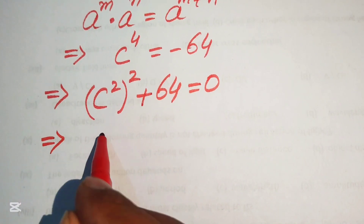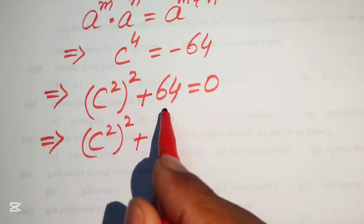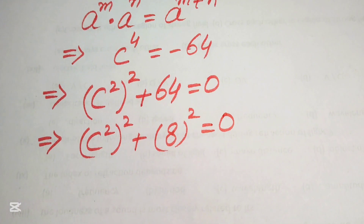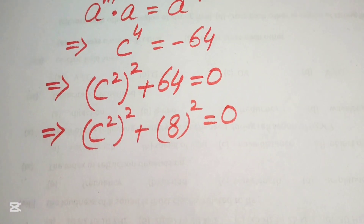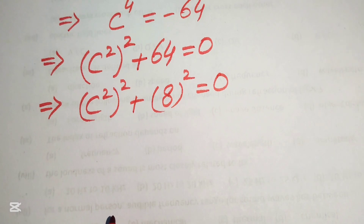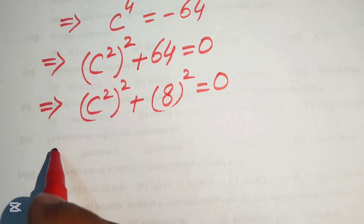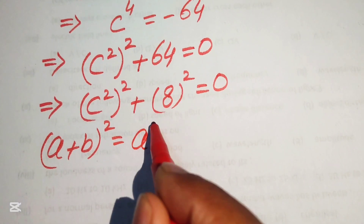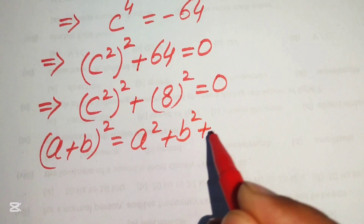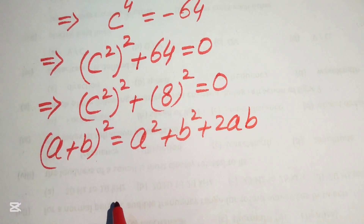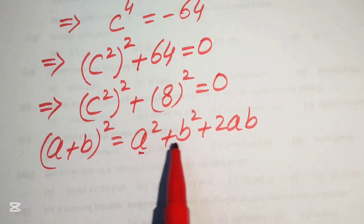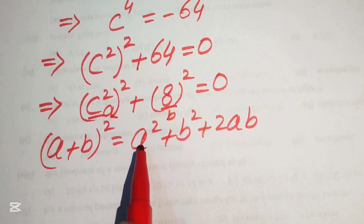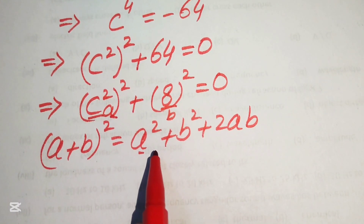We write 64 as 8 squared, so we have c squared whole squared plus 8 squared equals 0. We can solve this using completing the square. The formula is: a plus b whole squared equals a squared plus b squared plus 2 times ab. Here our a is c squared and our b is 8.